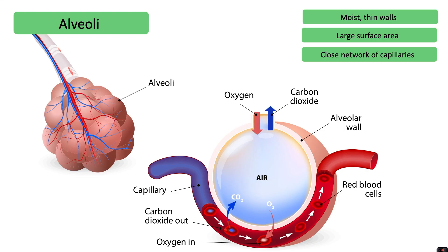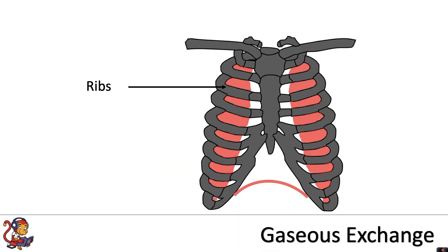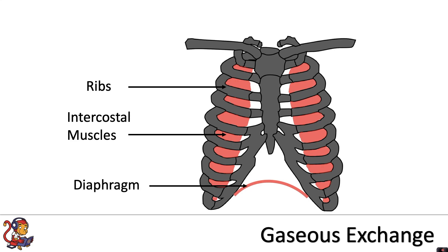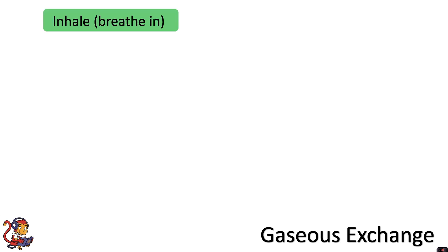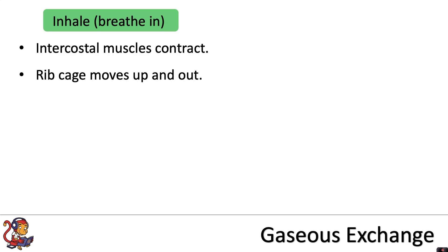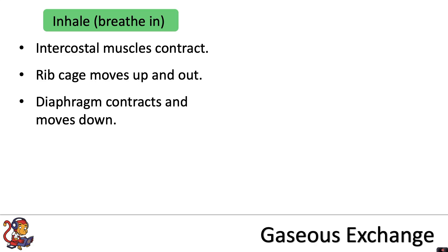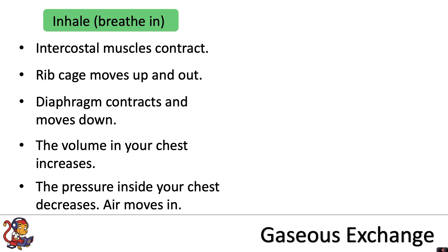Next we will look at how the body physically draws in and removes air. This involves the ribs, which are the bones that protect the respiratory system; the intercostal muscles, which are the muscles found between the ribs; and the diaphragm, which is the smooth muscle at the bottom of the rib cage. When we inhale, the intercostal muscles contract, the rib cage moves up and out, the diaphragm contracts and moves down, the volume in the chest increases, and the pressure inside decreases, so air moves in.